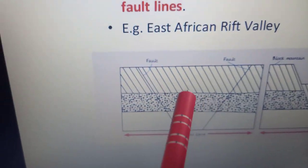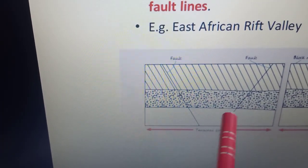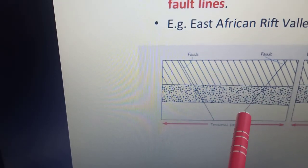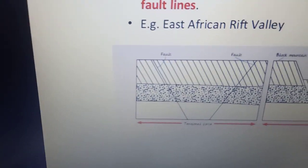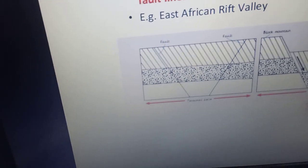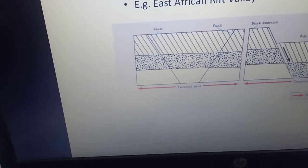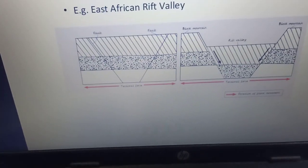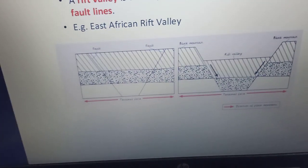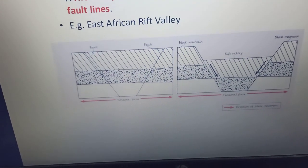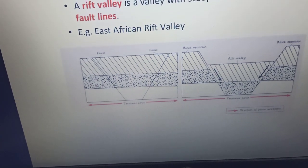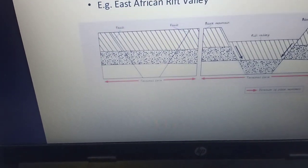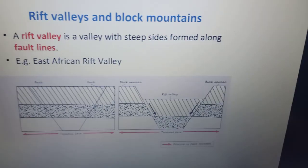then rocks develop huge cracks or fractures which are referred to as faults. When these faults are formed, rocks on either side get displaced. As a result, if the land between two parallel faults subsides down, then it forms a rift valley.